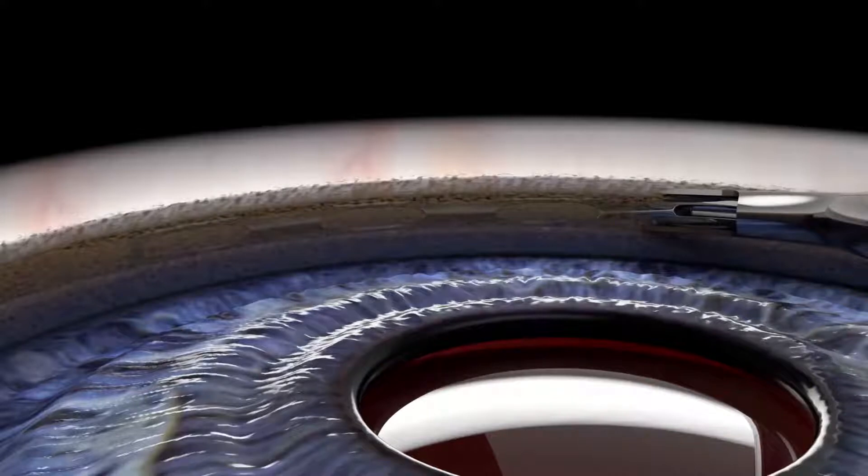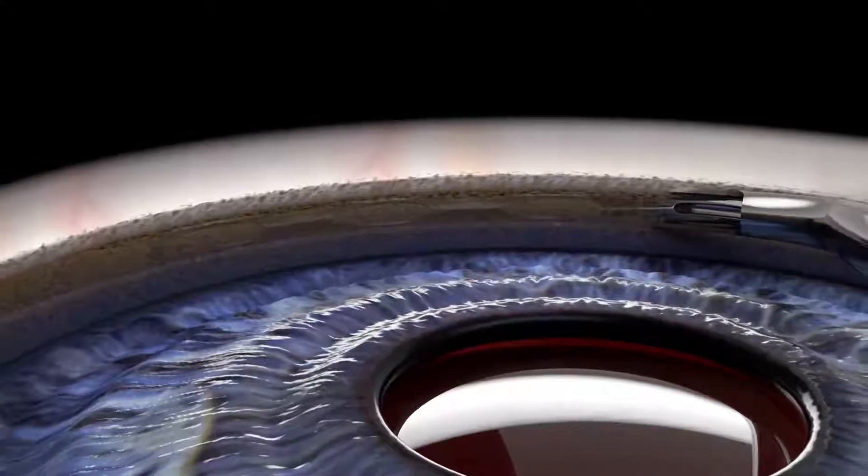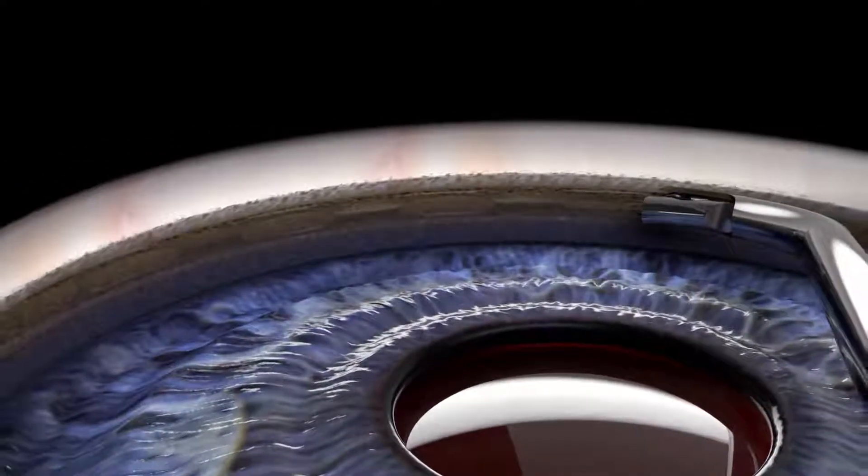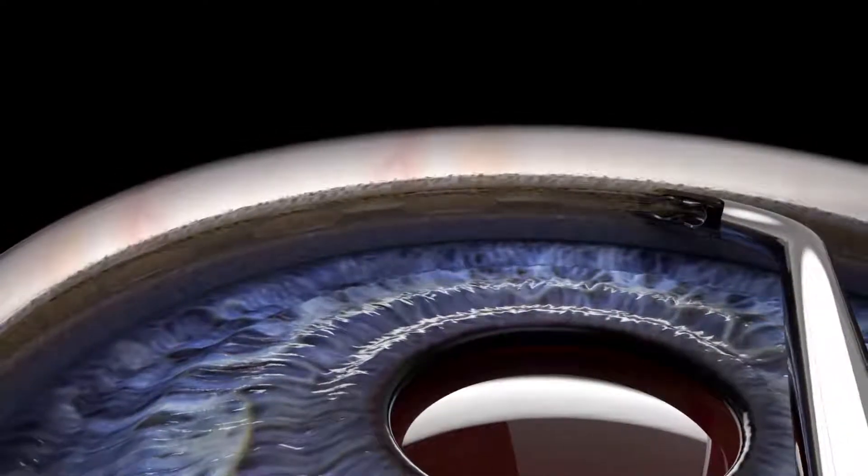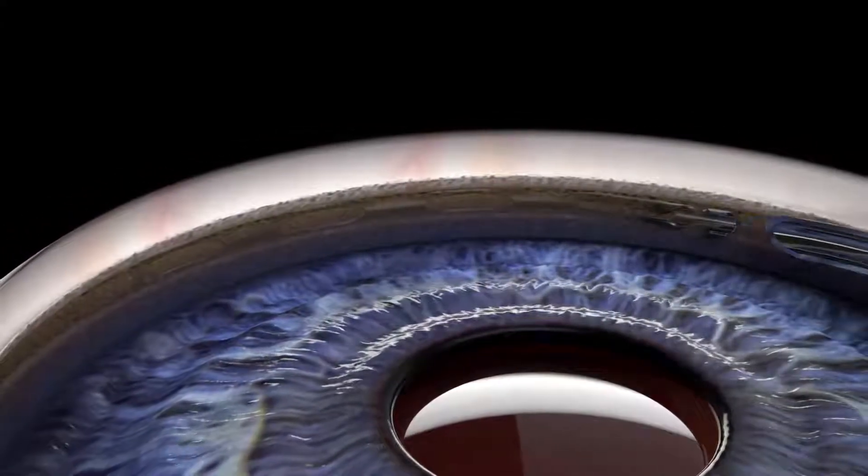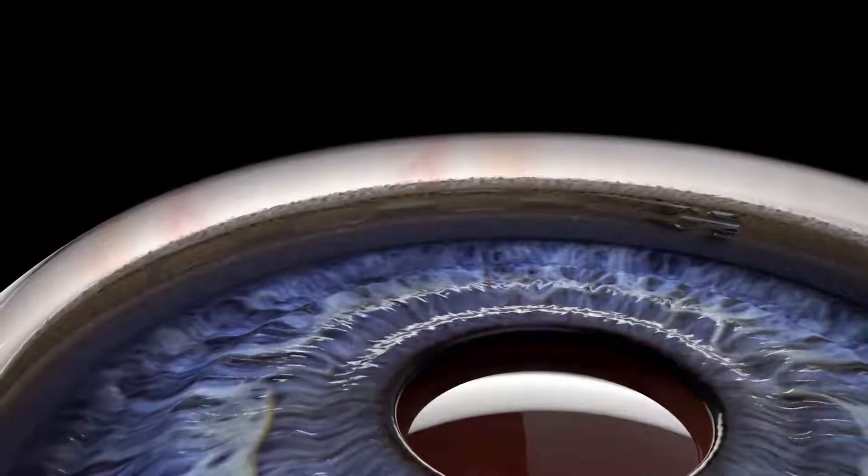Once satisfied with its position, the Hydrus is advanced until the microstent is released from the interlock. The Hydrus cannula is then removed from Schlem's canal and withdrawn from the eye.